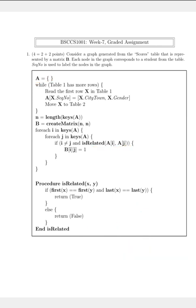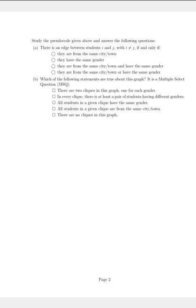Let's go to the options and see which is correct. There are two questions here. The first one states that there is an edge between students I and J with I not equal to J if and only if — as stated before, they have the same city and the same gender — which corresponds to option number 3.